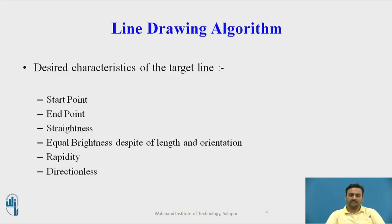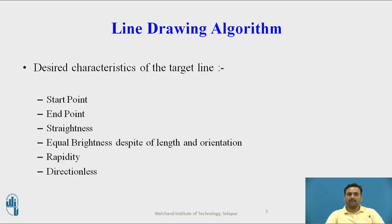The next characteristic is straightness. Whatever line connects the start to end point, it should be in a straight format. And the pixels which connect from the starting point to the end point should hold the same brightness. It should not happen that a certain pixel is a little bit dark and another is a little bit brighter — they should have equal brightness along the line, from the starting to the ending.